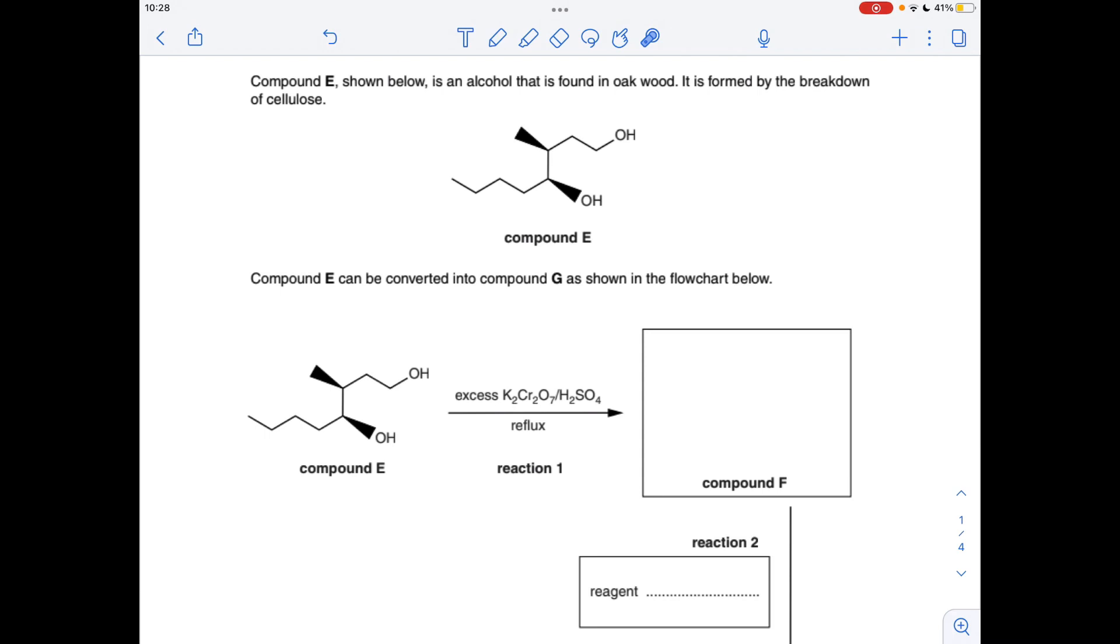Making a start on reaction 1: compound E is reacted with excess potassium dichromate(VI) and sulfuric acid. That's an oxidizing agent. We've got two parts of compound E that can be oxidized. The primary alcohol part is going to be oxidized to a carboxylic acid because we're in reflux.